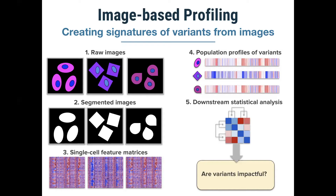We have matrices with single cells in the rows and cell features in the columns. The next step is aggregating information for one specific treatment, pooling information from multiple cells in the images. Finally, with those treatment signatures, we analyze the connections or differences between different treatments — in this case answering whether the variants are impactful or non-impactful.